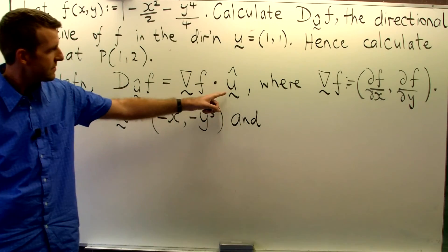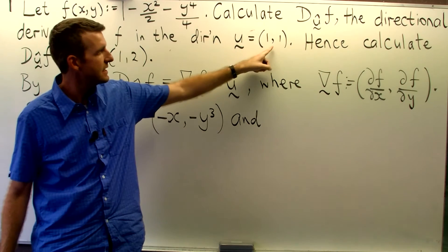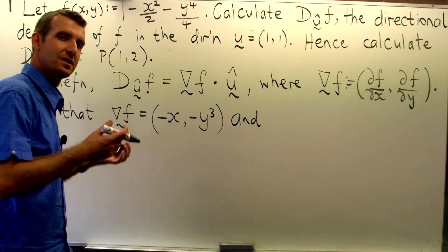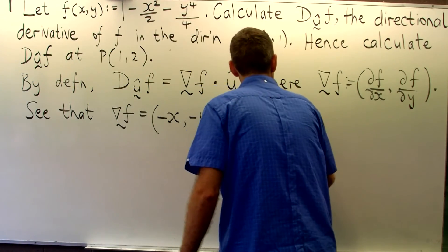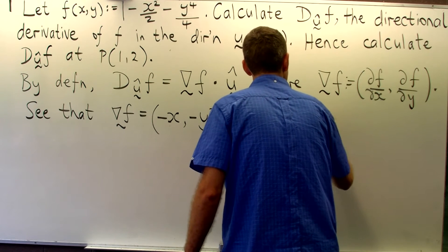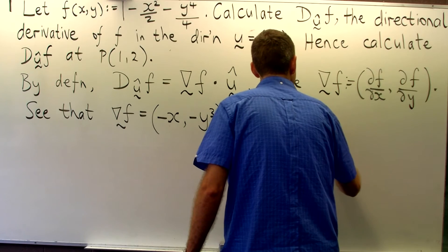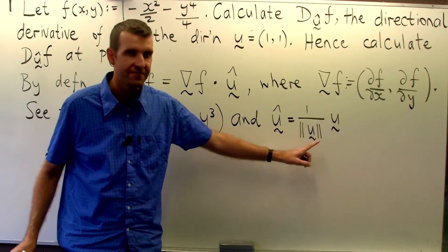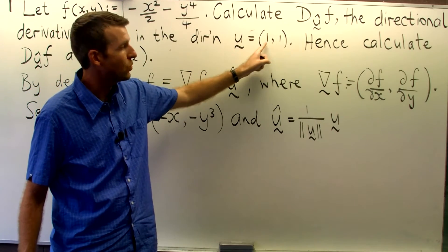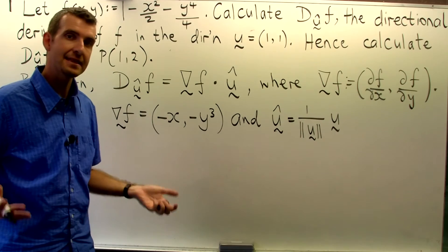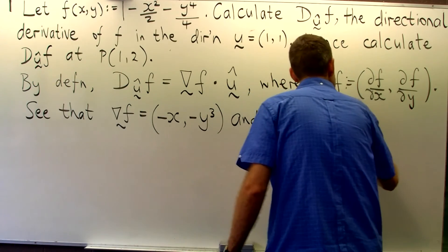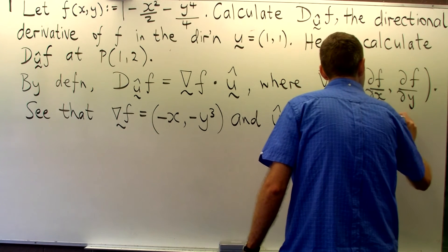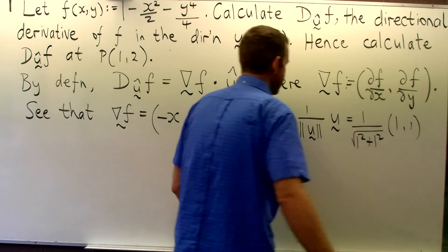Now we can produce a unit vector by taking the original vector and multiplying by 1 divided by its length. Now remember to get the length of a vector you take each component, square it, add the parts together and take the square root. So in this case, we're going to get something a little like this.